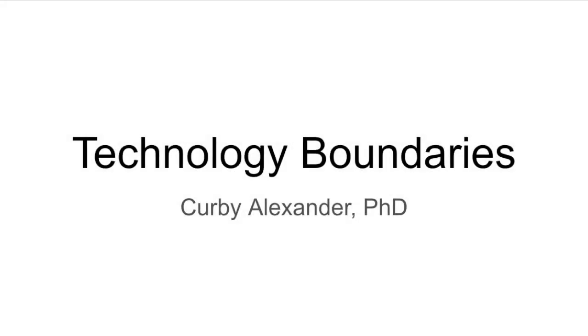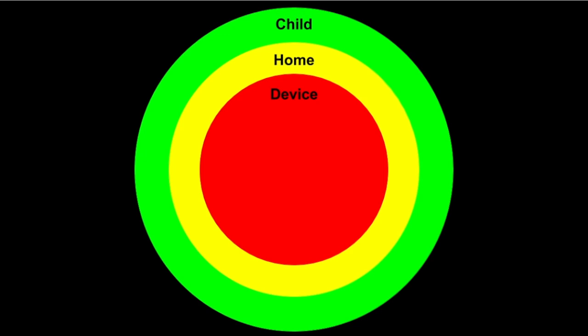Hi everyone. I just wanted to take some time to follow up on our discussion from a couple of weeks ago on technology boundaries. I'm going to basically go through the same tools and main points that I went through last time. You may remember I started with this diagram showing that when creating technology boundaries there are really three levels: the child level, the home level, and the device level. Let's first talk about the considerations at the child level.